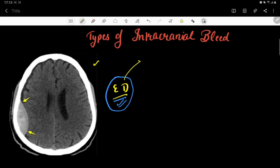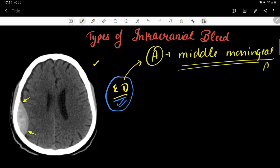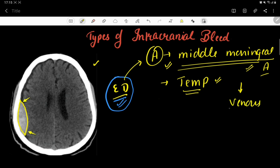Now let's study extradural hematoma in more detail. In most cases it is arterial, and the main artery involved is the middle meningeal artery — its rupture or injury leads to bleeding in the epidural space. The most common location is the temporal region. In some cases it can be venous, usually due to rupture of venous sinuses, leading to collection in the epidural space.